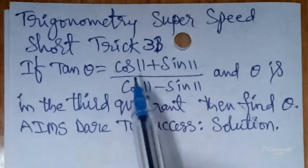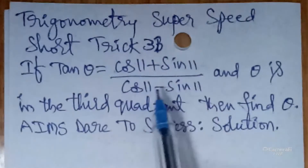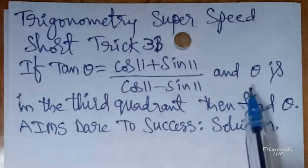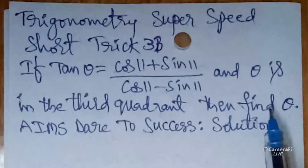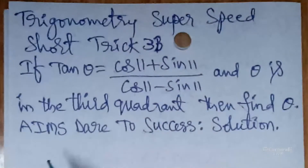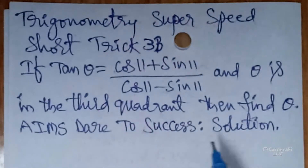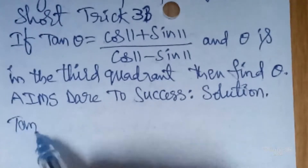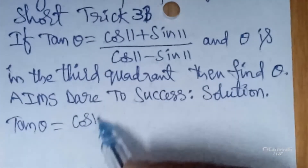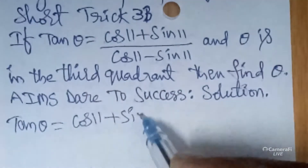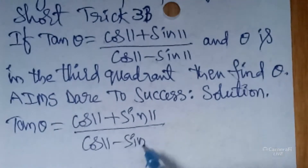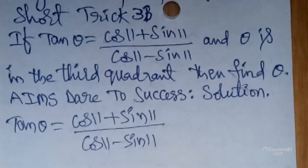Today I wanted to discuss with you: if tan θ equals (cos11 + sin11) / (cos11 - sin11), and θ is in the third quadrant, find the value of θ. Solution: the given value is tan θ = (cos11 + sin11) / (cos11 - sin11).